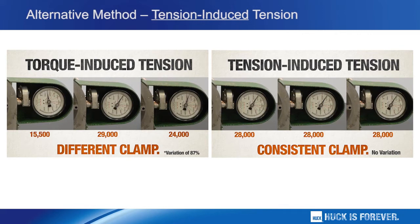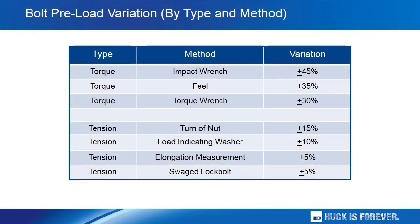Torque-controlled bolts may more effectively control torque, but they still do not deliver consistent clamp. The superiority of the tension-induced method is further highlighted by this chart. The tension-induced method results in an installation-to-installation variation of ±5% to ±15%, compared to the ±30% to ±45% delivered by torque-induced tension. Also note that one of the methods delivering the lowest variation is the swaged lock bolt.